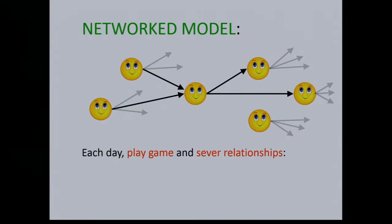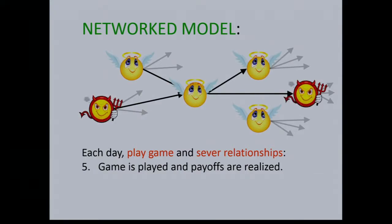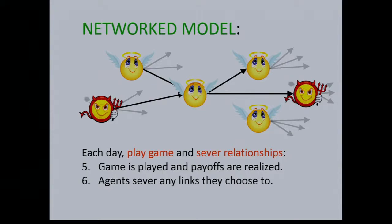After network formation, agents play the prisoner's dilemma game on all of their links, choosing to cooperate or defect across all their relationships. After payoffs are realized, agents can sever any links they choose. For example, a middle agent who chose to cooperate might sever links to partners that chose to defect on him — both the one sponsoring a relationship to him and the one he is sponsoring. This is the stage game, repeated over time.